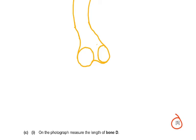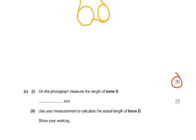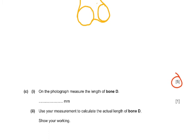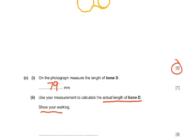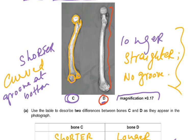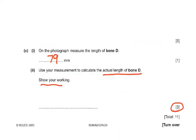Next, on the photograph you must measure the length of bone D. Measuring on the diagram, this comes to approximately 79 millimeters. You then use this measurement to calculate the actual length of bone D, showing your working — worth three marks.